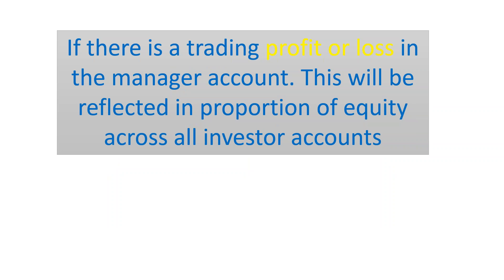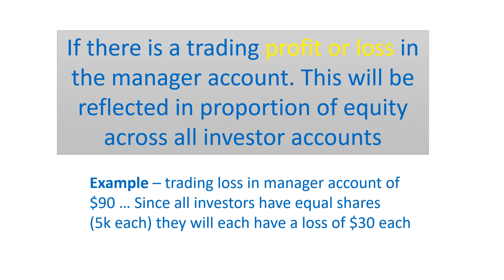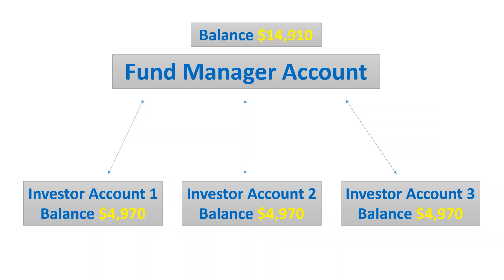What happens when we have a trading profit or a loss in the manager account? It will be reflected in proportion of equity across all the investor accounts. For example, if the manager has a trading loss of $90, since all investors have equal shares of $5,000 each, they will each have that $90 loss split between them, making it a $30 loss each. The manager's balance goes down by $90 and each investor goes down by $30.